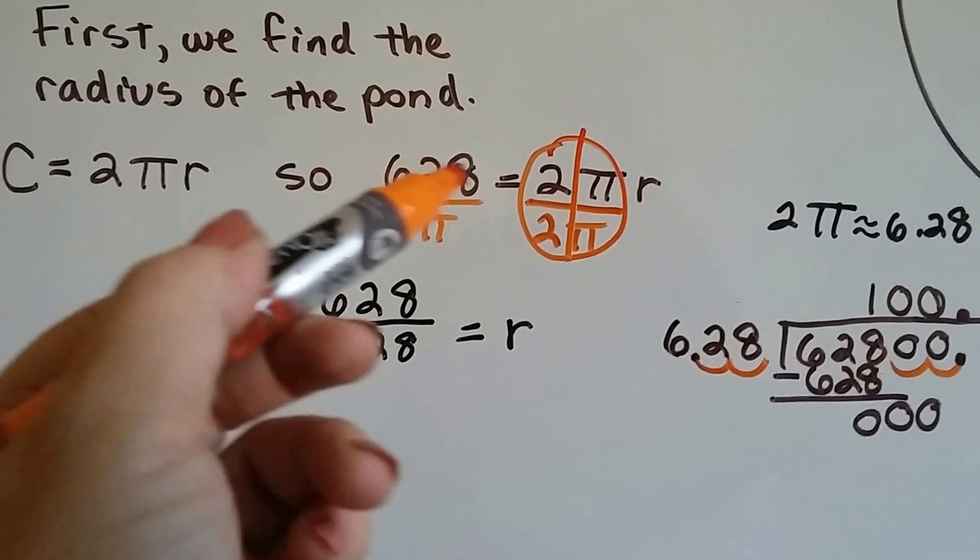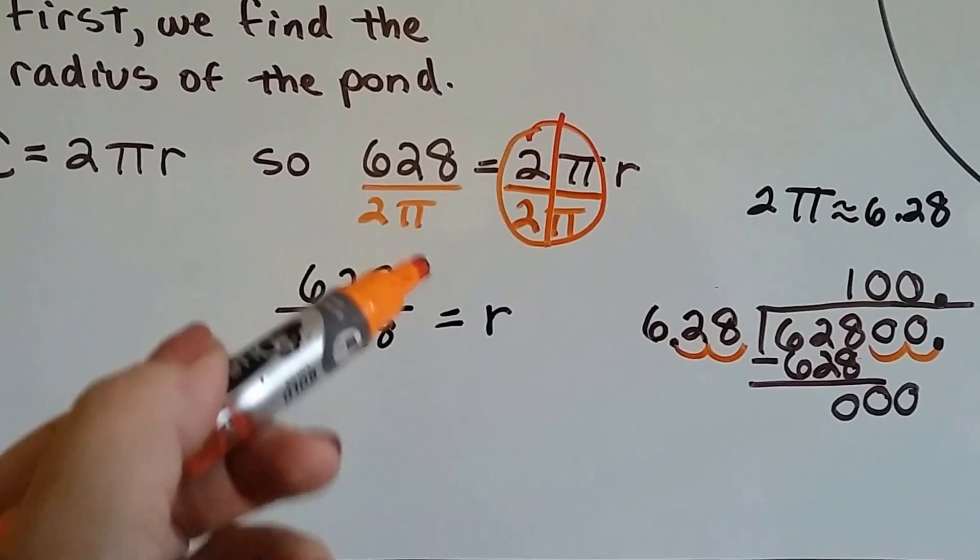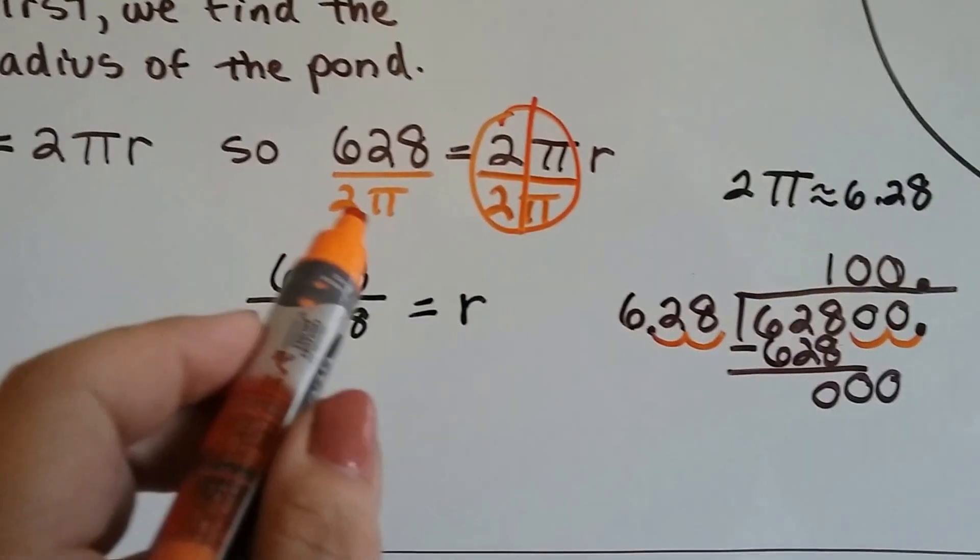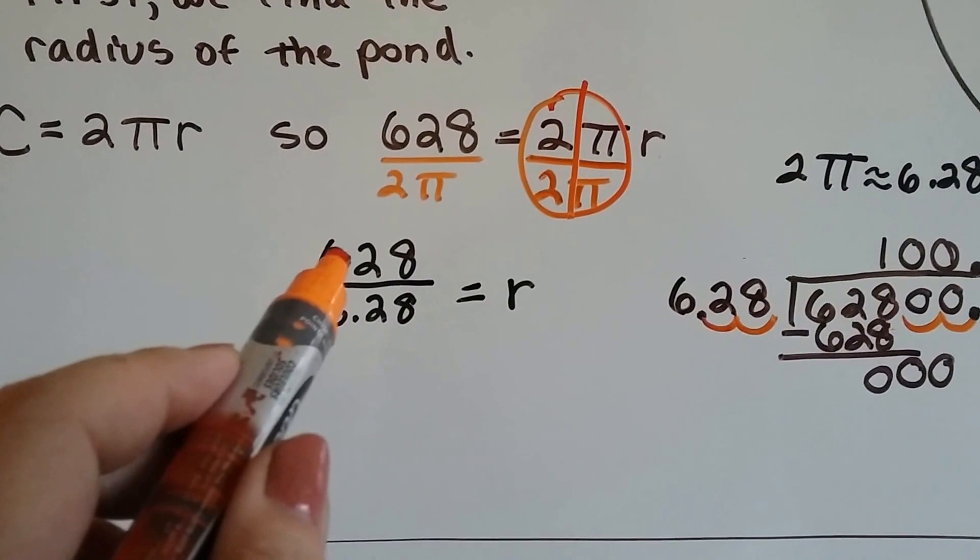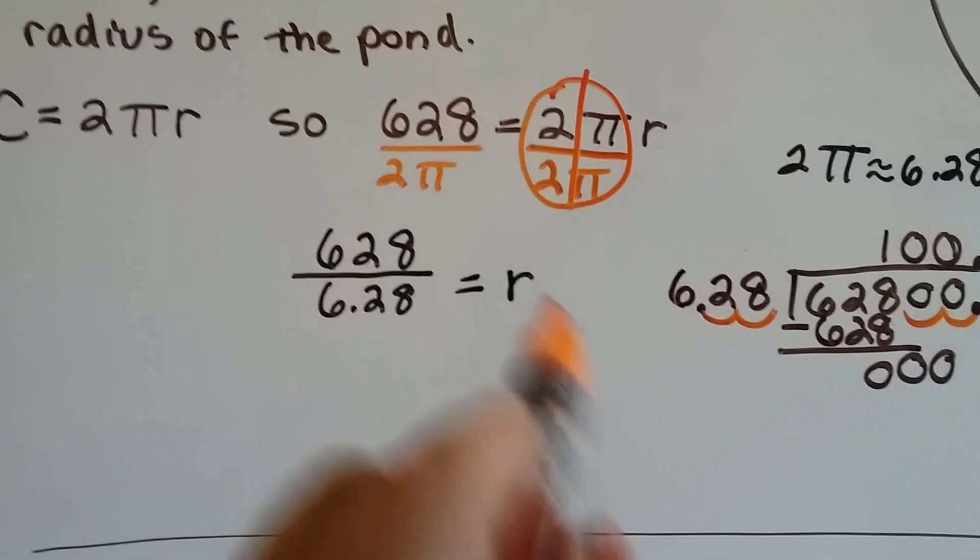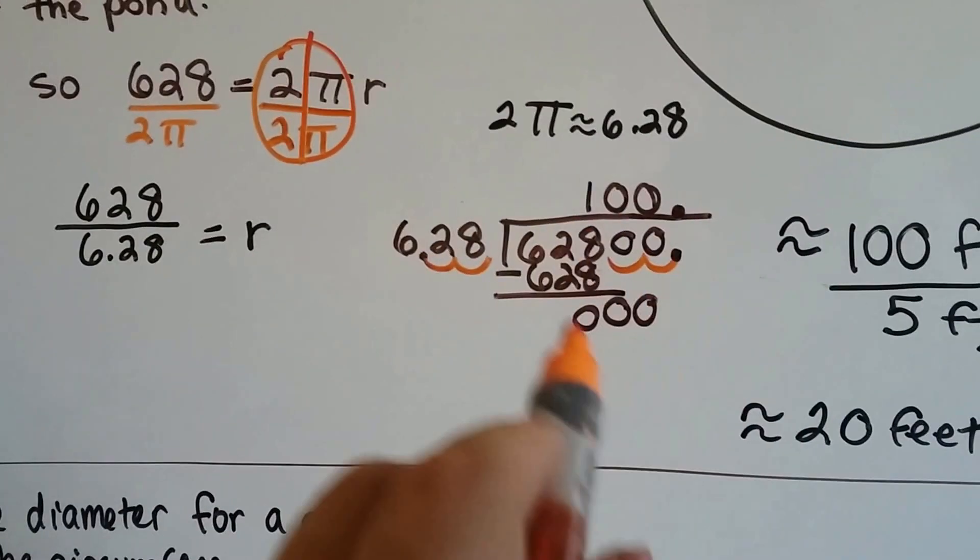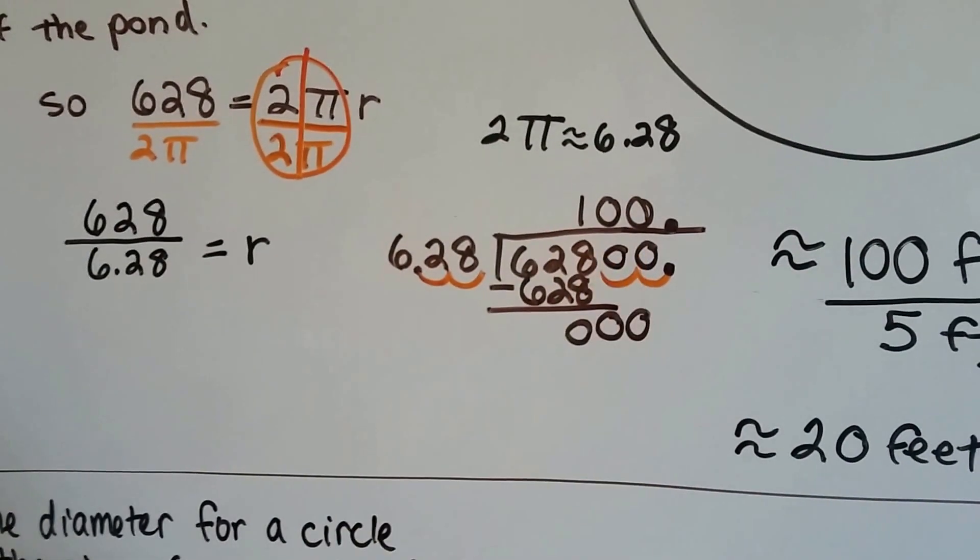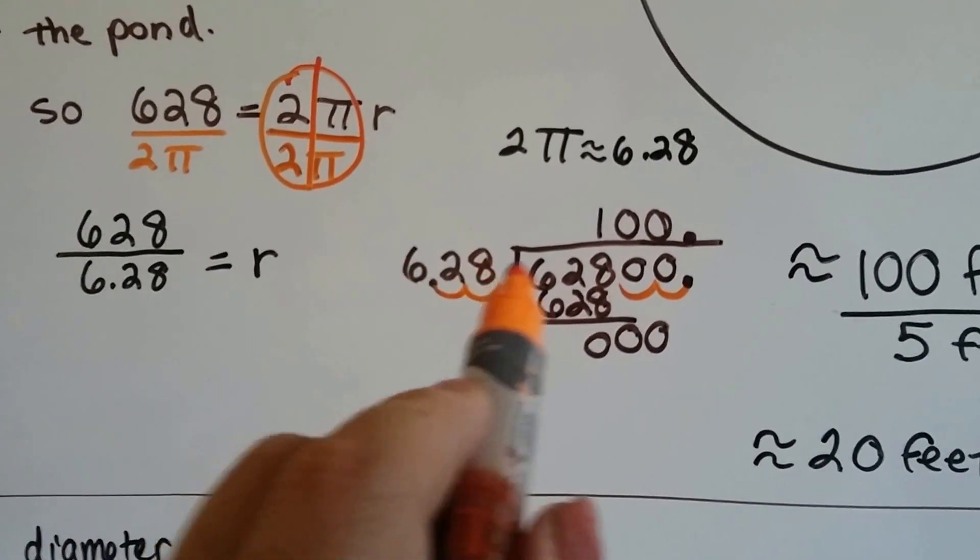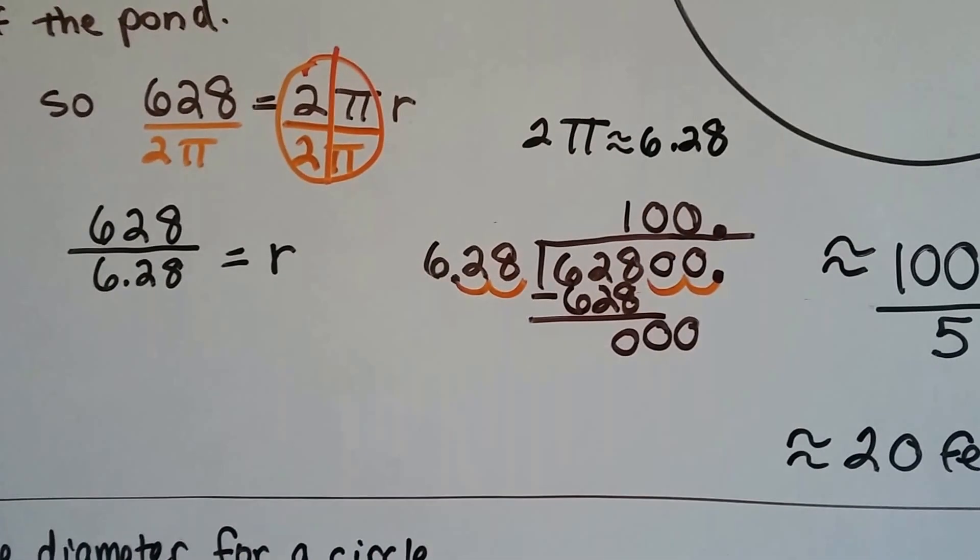Now we've got 628 divided by 2 pi. Well, we know that 2 times pi is approximately 6.28. So we can divide the 628 by 6.28. And then it'll equal the r. And we do. And we come up with 100. We move the decimal points over, and 628 goes into it 100 times.